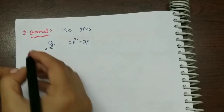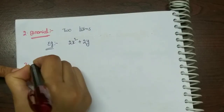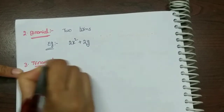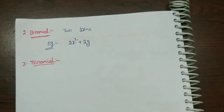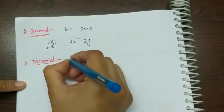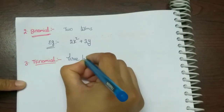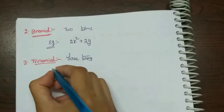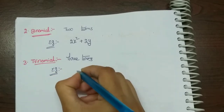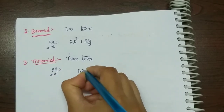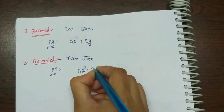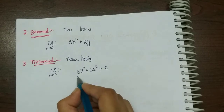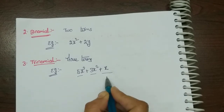Next is trinomial. Tri means three. So monomial is one term, binomial is two terms, and trinomial is three terms.